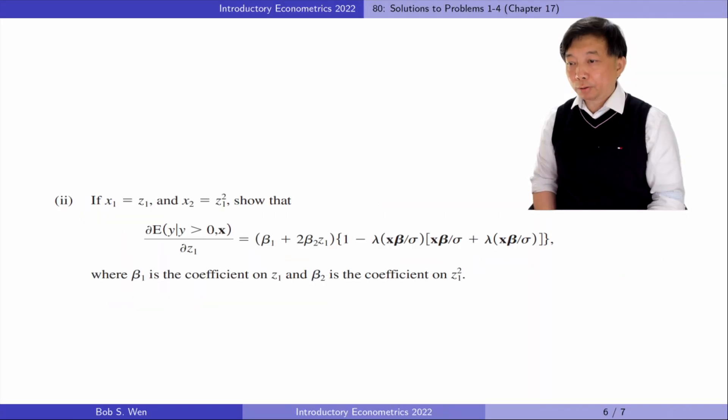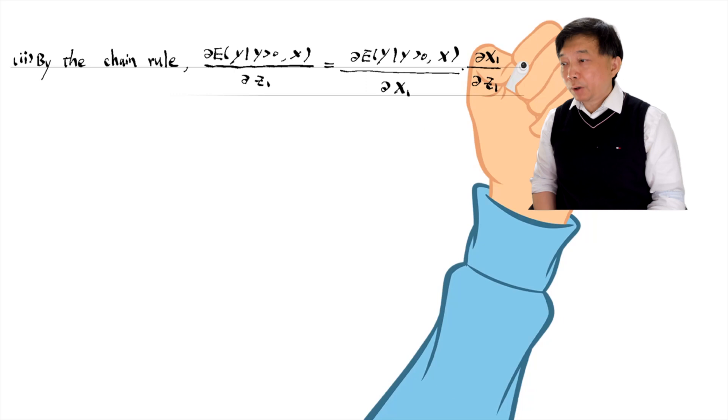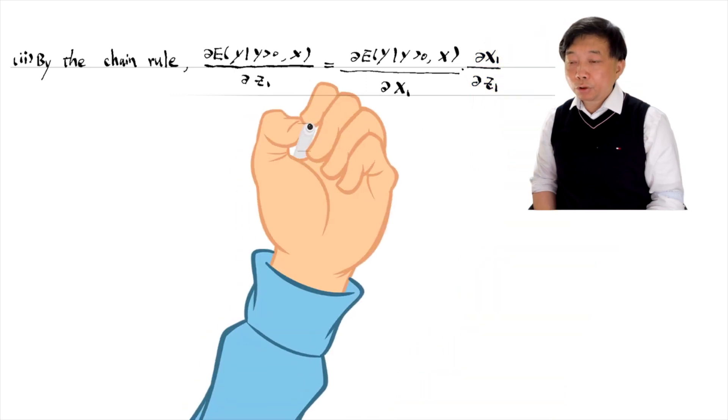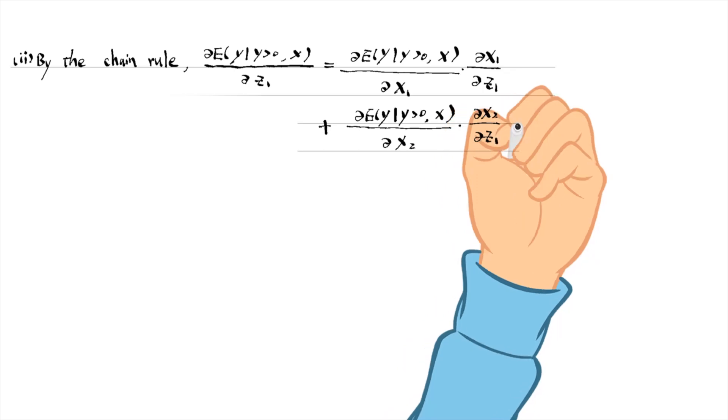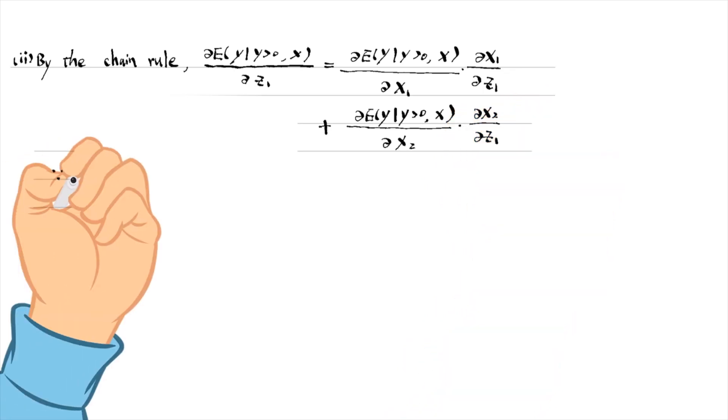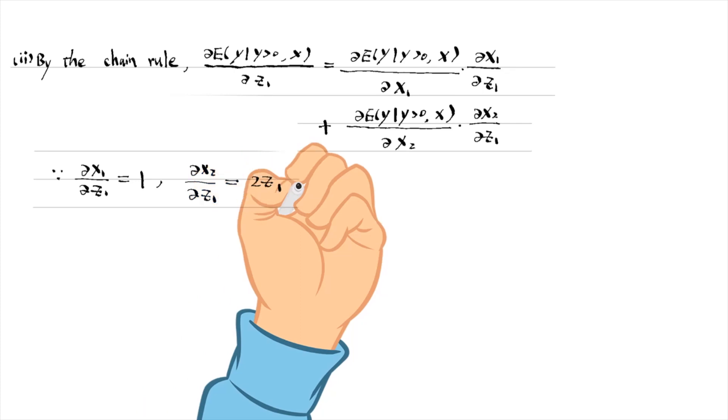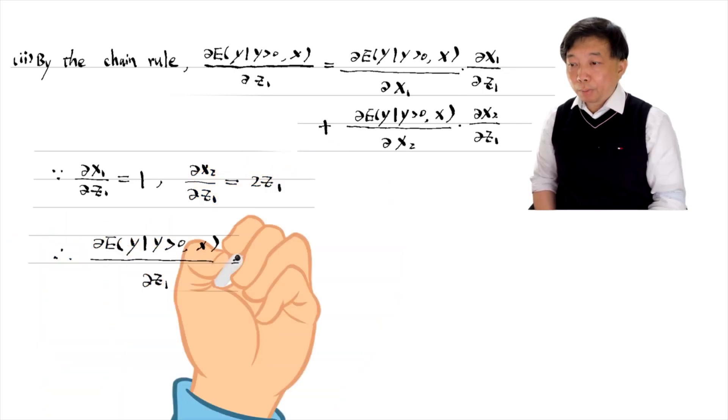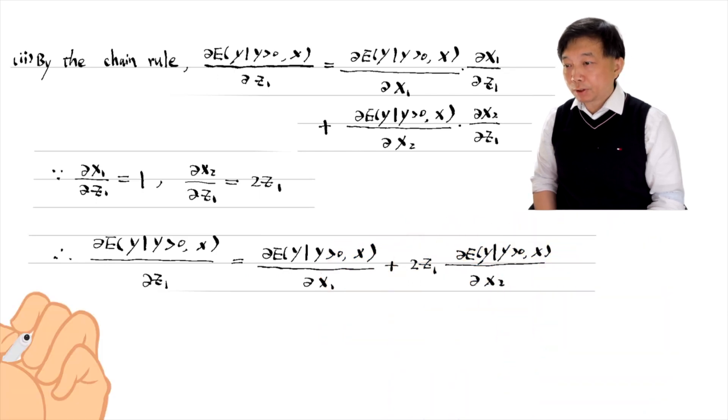For part two, we still use the chain rule. Now z₁ is in x₁ and x₂, so we write the first derivative into two parts. Using equation 17.26 in the textbook again, we can obtain the answer.